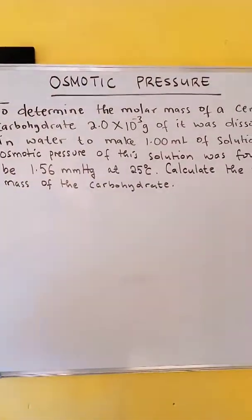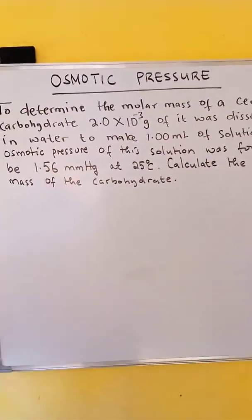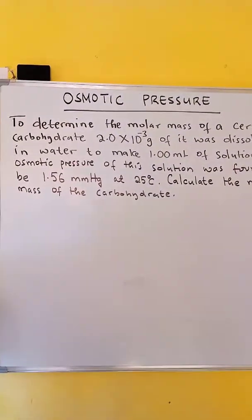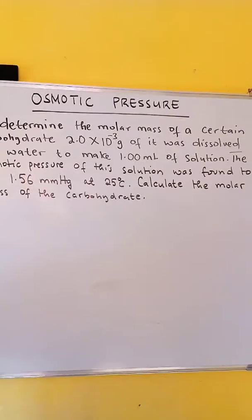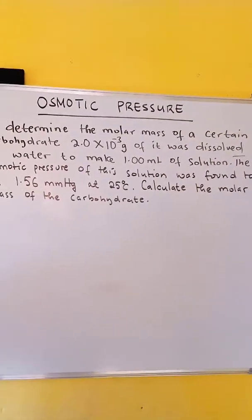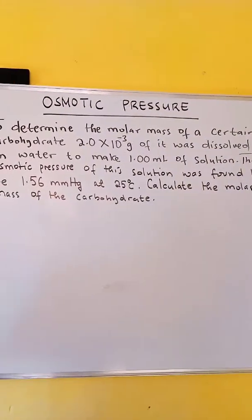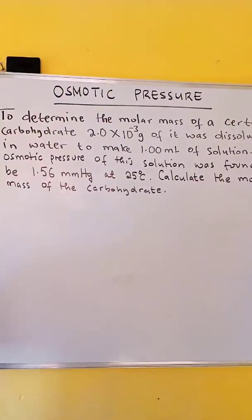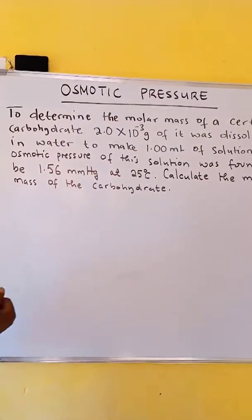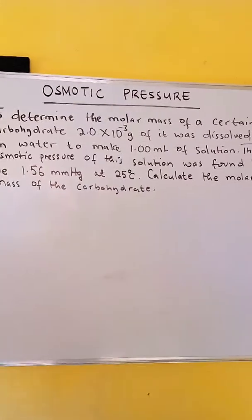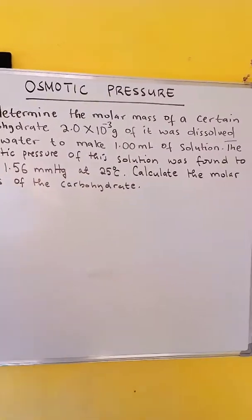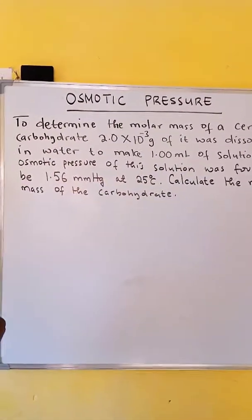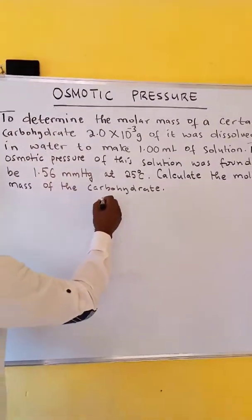To determine the molar mass of a certain carbohydrate, 2.0 times 10 to the minus 3 grams of it was dissolved in water to make 1.00 milliliter of solution. The osmotic pressure of this solution was found to be 1.56 mm mercury at 25 degrees Celsius. Calculate the molar mass of the carbohydrate.